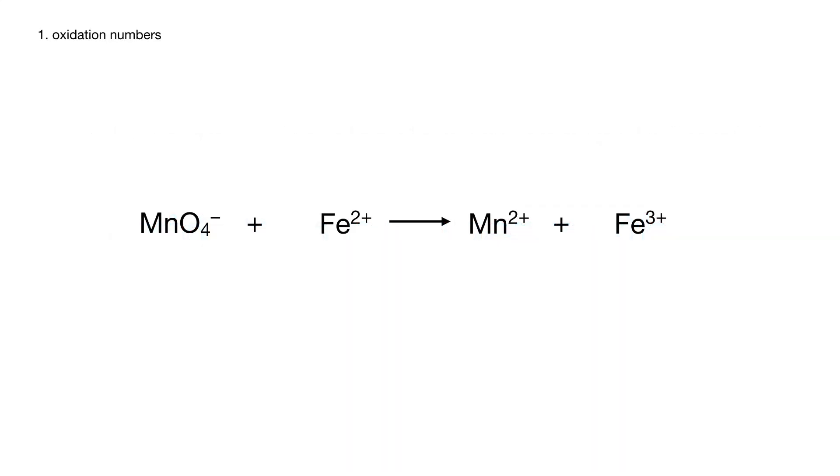The first step is we need to put oxidation numbers over each species that's changing oxidation states. That's a plus 7 for the manganese in permanganate, a plus 2 for the iron, a plus 2 for the manganese, and a plus 3 for the iron. Those last three are all monatomic ions, meaning the oxidation state matches the charge.